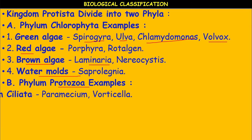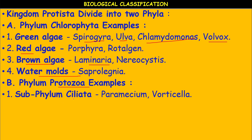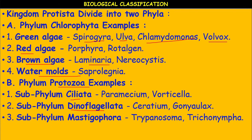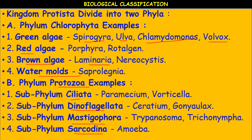Phylum Protozoa is divided into subphyla based on locomotory organs: Ciliata, Dinoflagellata, Mastigophora, and Sarcodina. Subphylum Ciliata includes examples like Paramecium and Vorticella. Paramecium is a unicellular organism that moves with the help of cilia — that is why it belongs to subphylum Ciliata.